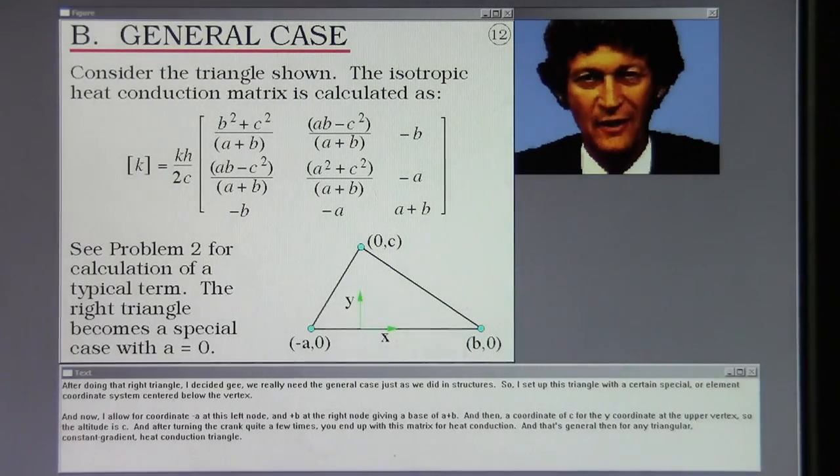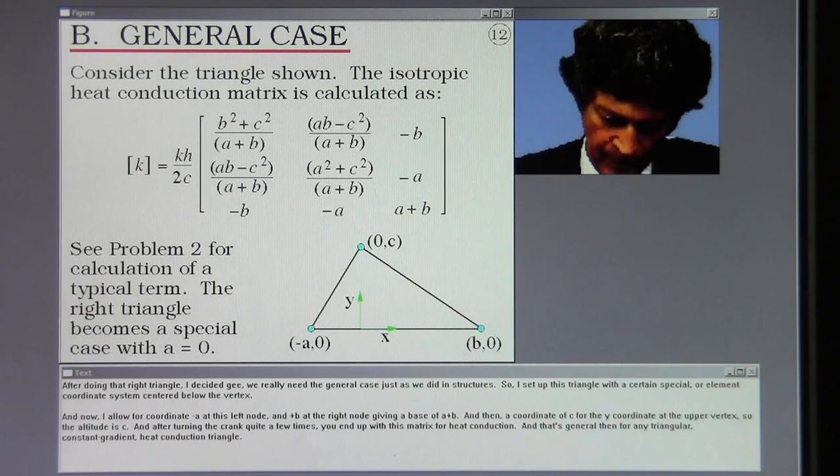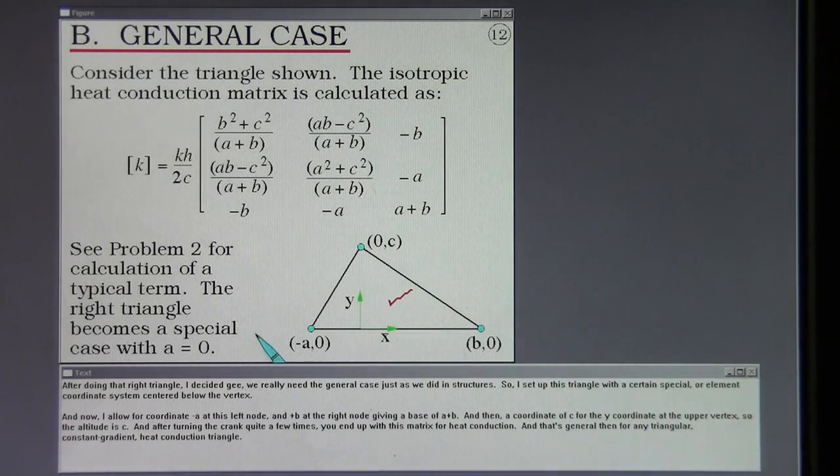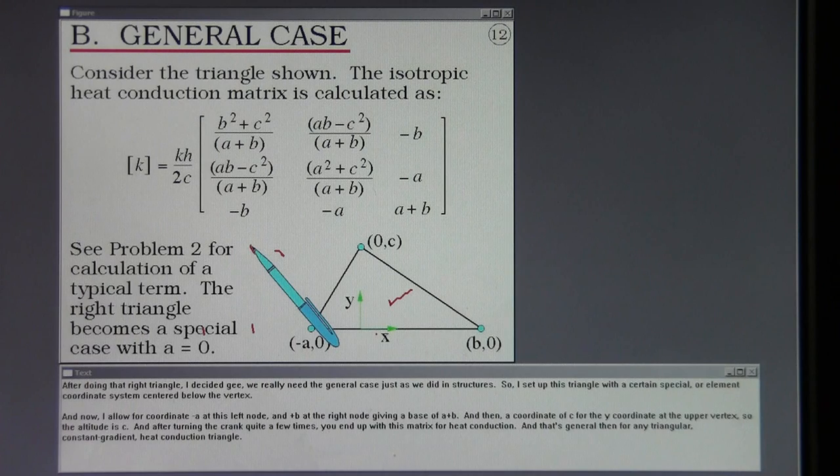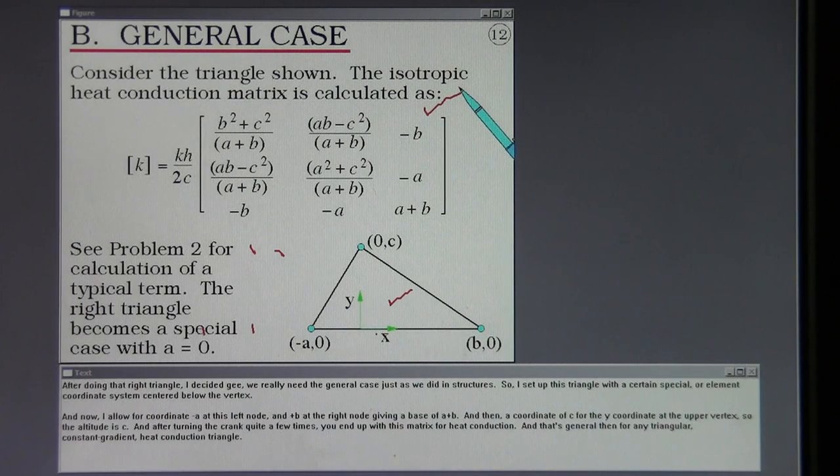After doing that right triangle, I decided we really need the general case just as we did in structures. So I set up this triangle with a certain element coordinate system centered below the vertex. I allow for a coordinate minus a at this left node and plus b at the right node, giving a base of a plus b and then a coordinate of c for the y coordinate at the upper vertex. So the altitude is c. After turning the crank quite a few times, you end up with this matrix for heat conduction. That's general then for any triangular constant gradient heat conduction triangle.